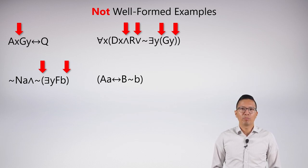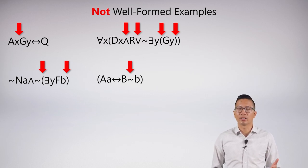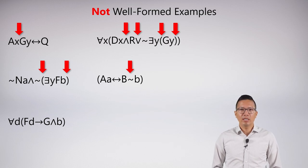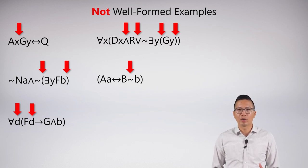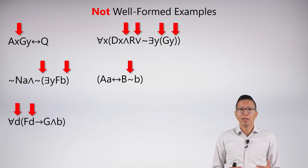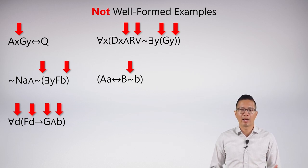Next example: A of A, biconditional B, negation B. The problem is you cannot have a logical connective inside a predicate in the slot of a term. That negation can't be there — you can only have a term, which is defined as a name letter or a variable letter. Another example: 'for all D, bracket F D arrow G and B.' The first mistake is that D is paired with our quantifier, but quantifiers must be paired with a variable letter, lowercase i through z — D is a name letter. We also have predicate letter G on its own without a term, and a term letter on its own not inside any predicate.